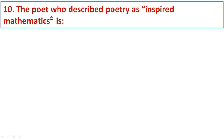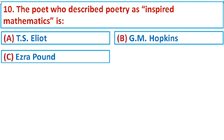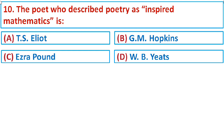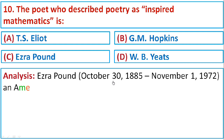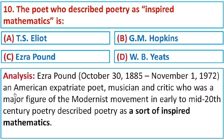Question number ten: The poet who described poetry as 'inspired mathematics' is Option A: T.S. Eliot, Option B: Gerard Manley Hopkins, Option C: Ezra Pound, or Option D: W.B. Yeats. Ezra Pound, born October 30, 1885, and died November 1, 1972, was an American expatriate poet, musician, and critic — a major figure of the modernist movement in early to mid-20th century poetry — who described poetry as a sort of inspired mathematics. The correct option is C: Ezra Pound.